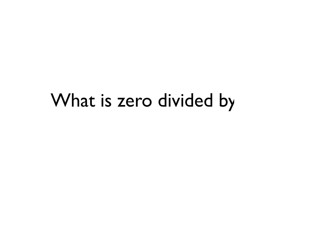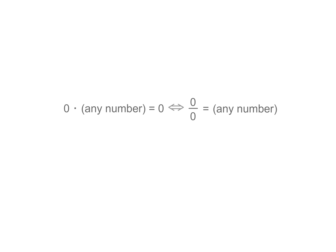What is zero divided by zero? Using the concept of inverse operations, zero times any number equals zero. Therefore, zero divided by zero could be anything, even zero.